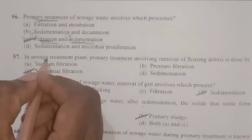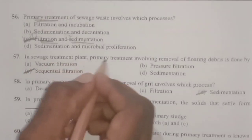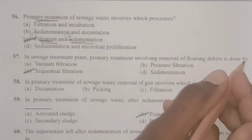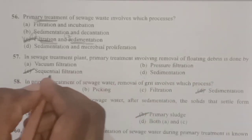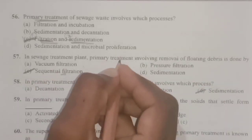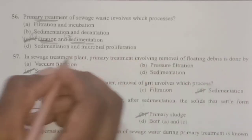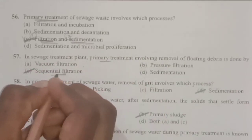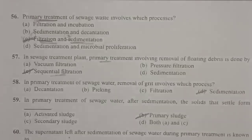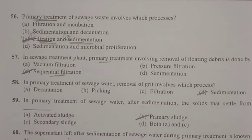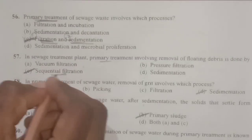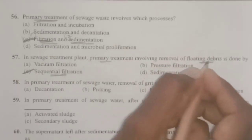Next: in a sewage treatment plant, primary treatment involving removal of floating debris is done by sequential filtration. When sewage water is passed over different sized meshes, sequential filtration removes all the floating debris.